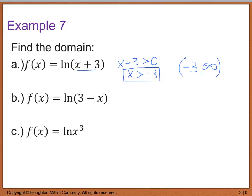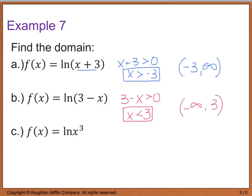Now for part b, I'm going to take what's inside: 3 minus x, set that greater than 0, and solve for x. So x is going to be less than 3. I can either write it that way, or in interval notation from negative infinity to 3. Again, I don't include either endpoint, so I use parentheses.